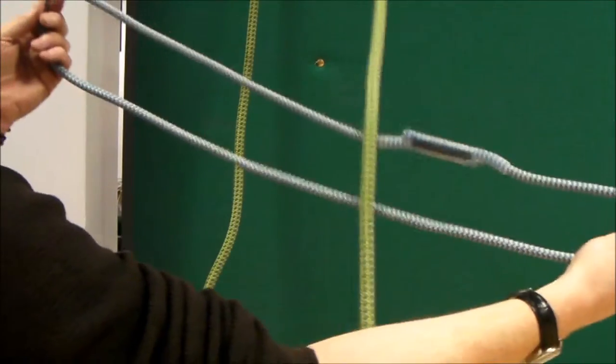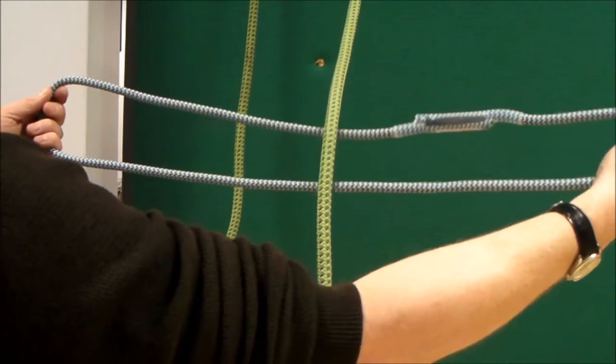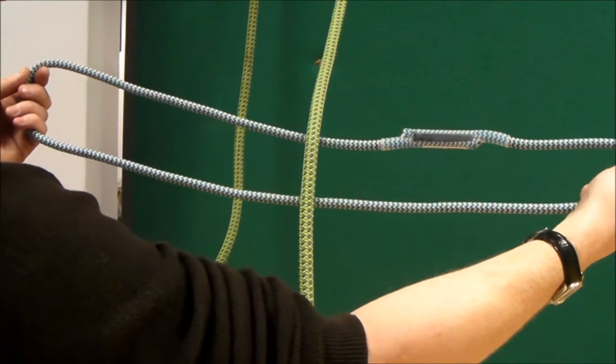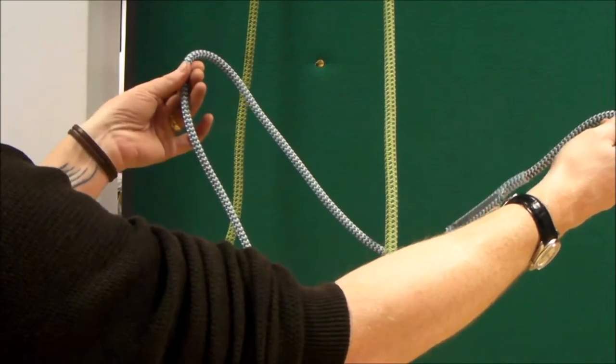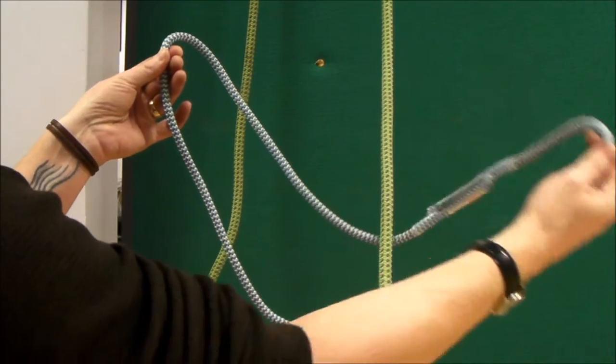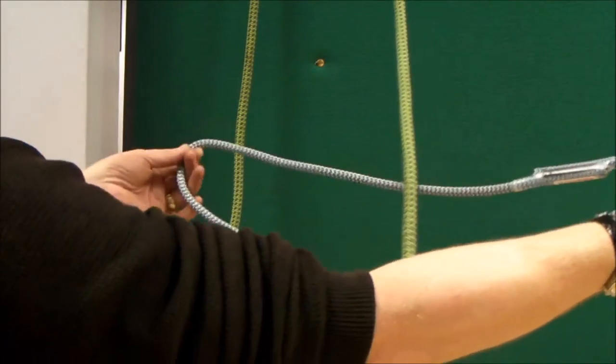So half and half, exactly in the middle there. And the reason for that will become clear in a moment. You wrap the rope round twice. Your left hand stays still. It's the right hand that feeds the rope round.